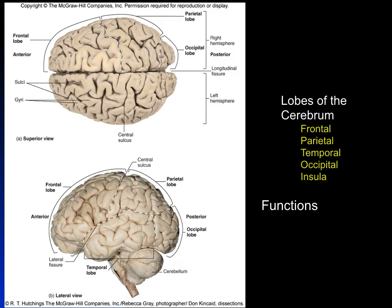The frontal lobe contains the motor regions, including the primary motor cortex, which specifically controls different muscles. The most anterior part — the prefrontal area — is where our personality and executive functions are located, controlling conscious memory and working memory. The parietal lobe lies behind it and contains general sensory areas receiving input from the skin and muscles. It also shares some auditory areas with the temporal lobe. The occipital lobe has visual areas, and the temporal lobe has memory, auditory, and smell-related areas.